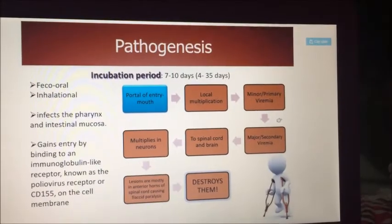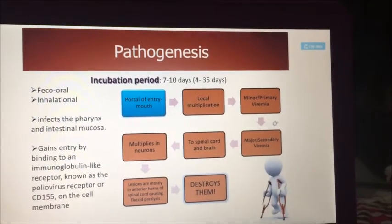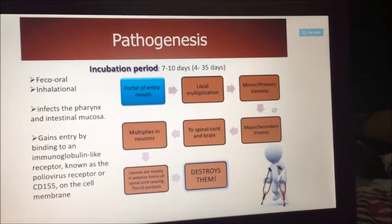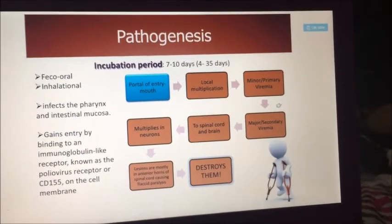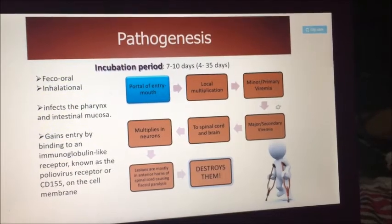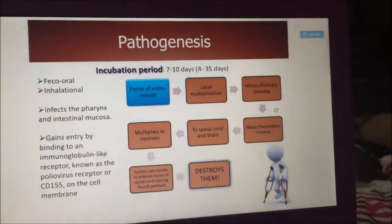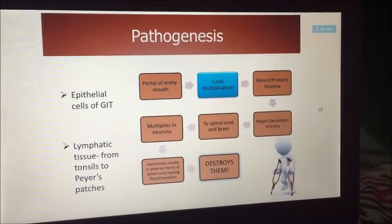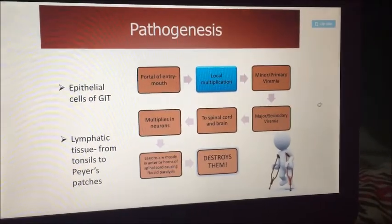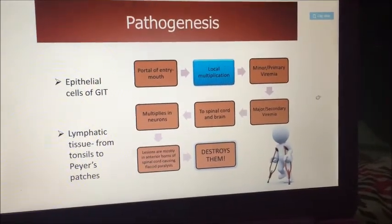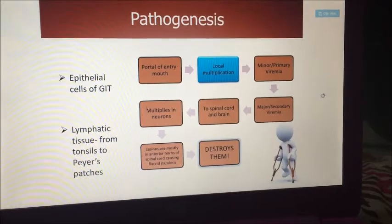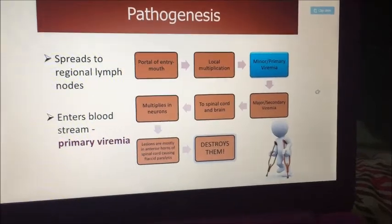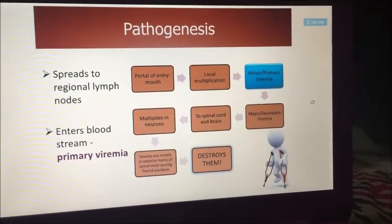For the pathogenesis, polio is usually fecal-oral. It could also be acquired through inhalation. It usually infects the pharynx and intestinal mucosa. It gains entry by binding to an immunoglobulin receptor known as the poliovirus receptor or CD155 on the cell membrane. For local multiplication, the epithelial cells of the gastrointestinal tract go through the lymphatic tissue from tonsils to Peyer's patches. Then it spreads to the regional lymph nodes and enters the bloodstream through primary viremia.